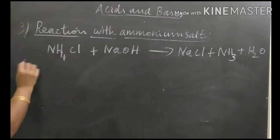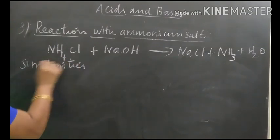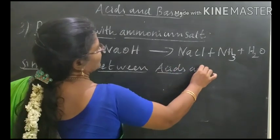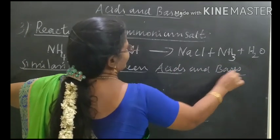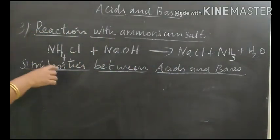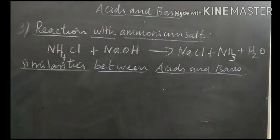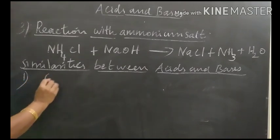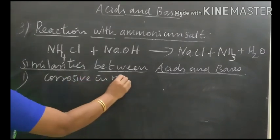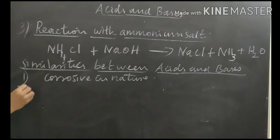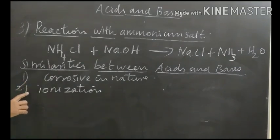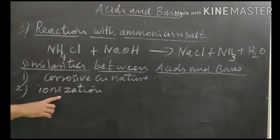Then, similarities between acids and bases. Now we say the same characters which are present in both acids and bases. First point: they are corrosive in nature. Second point: they undergo ionization in aqueous solution — both acids and bases undergo ionization in aqueous solution.